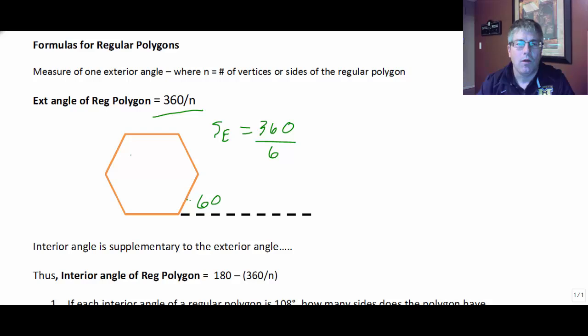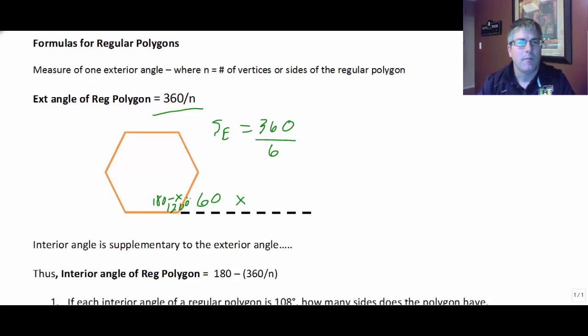And we also know that the exterior angle and the interior angle are supplements. So if this is some measure x, we know the interior angle is 180 minus x. So it's easy to see here that in this hexagon, that interior angle is going to be 120 degrees.